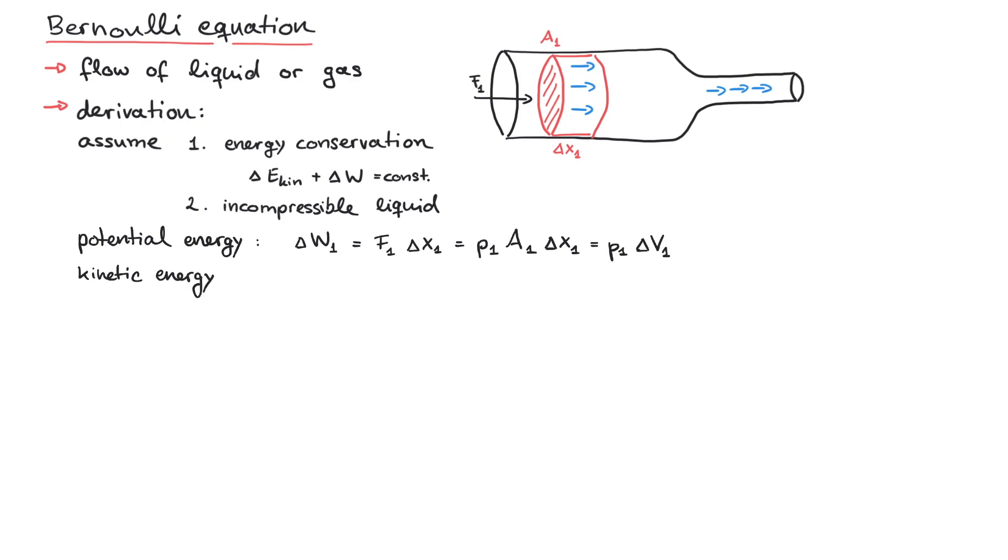Next we can write down the kinetic energy. It is mass times velocity squared over 2. The mass should be written as the density times the same volume element that we used before for the potential energy.